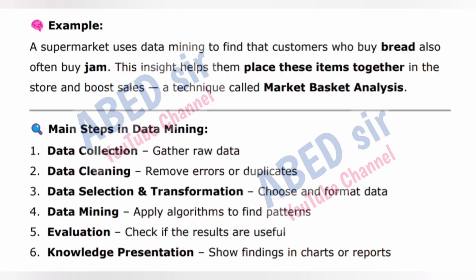Main steps in data mining: 1. Data collection — gather raw data. 2. Data cleaning — remove errors or duplicates. 3. Data selection and transformation — choose and format data. 4. Data mining — apply algorithms to find patterns. 5. Evaluation — check if the results are useful. 6. Knowledge presentation — show findings in charts or reports.